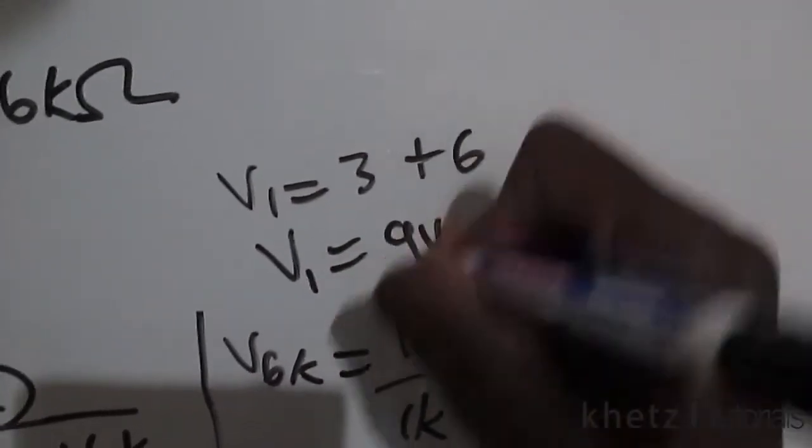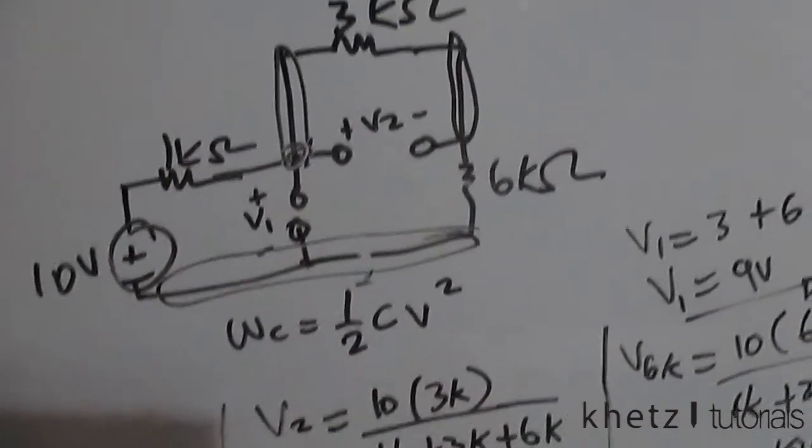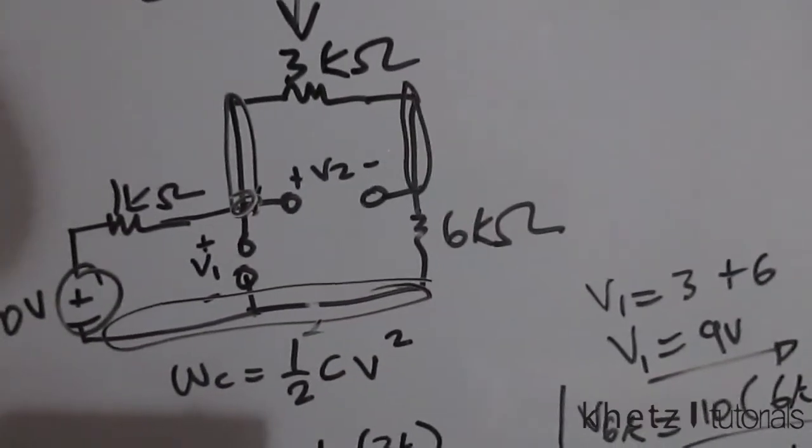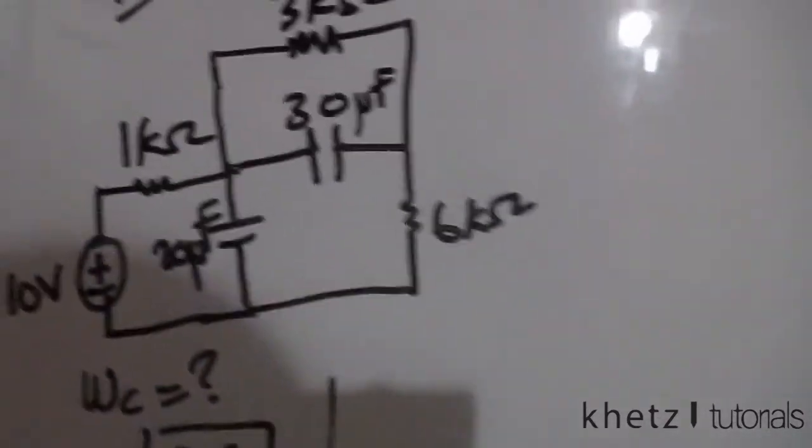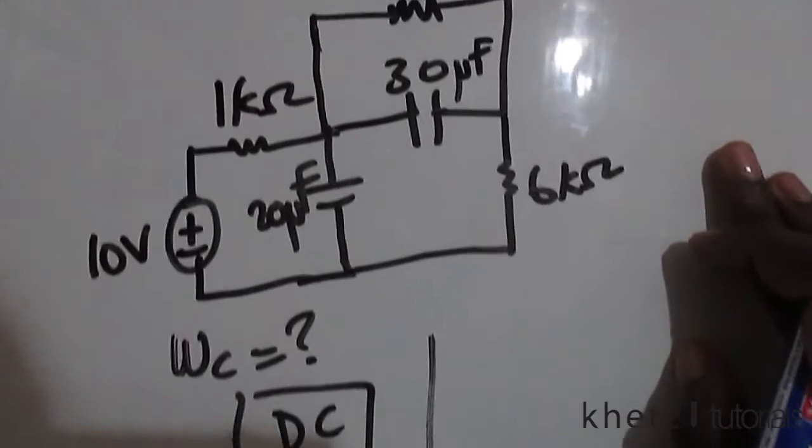Therefore v1 equals 9 volts. Now I have the voltage values for both of these capacitors, and we can proceed to find what the question is actually asking for. The question is asking for the energy associated with each capacitor.